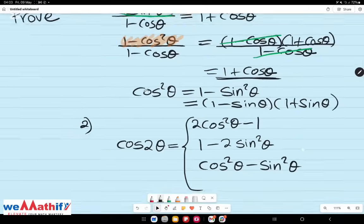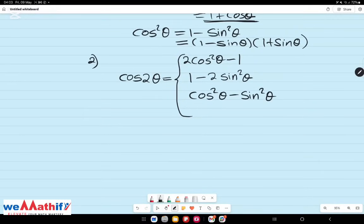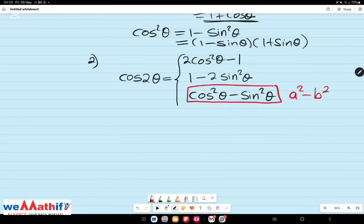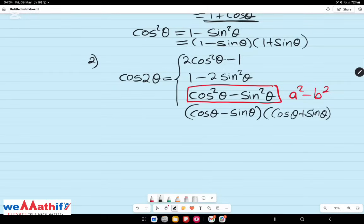However, in this video, I'm going to show you two other ways of representing cos 2 theta. And the first way, you have guessed it, has to do with this last identity for cos 2 theta, which is in the form of a squared minus b squared. And we all know from our grade 9 and 10 work that this is a difference of two squares. So we can rewrite cos 2 theta as cos theta minus sine theta into cos theta plus sine theta.